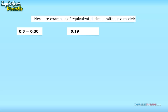Here are some examples of equivalent decimals without a model. 0.3 equals 0.30, 0.4 equals 0.40, 0.19 equals 0.190, 0.03 equals 0.030, 0.468 equals 0.4680.